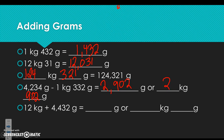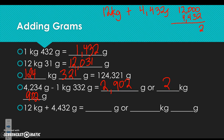Last example: 12 kilograms plus 4,432 grams. Convert 12 kilograms to 12,000 grams, then add 4,432: 12,000 plus 4,432 equals 16,432 grams, or 16 kilograms 432 grams.